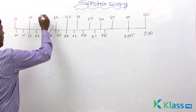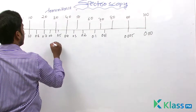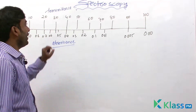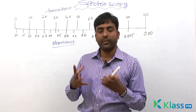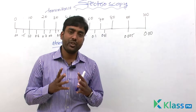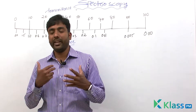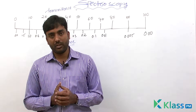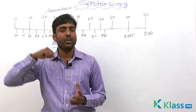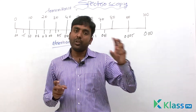What Beer-Lambert's Law tells us is there is a relation between absorbance and the concentration and path length of the absorbing medium. Here transmittance and absorbance values are given. This chart gives information about the relation between transmittance and absorbance. Transmittance is a measure of the amount of radiation transmitted by an absorbing medium — simply the ratio of the intensity of transmitted radiation to the intensity of incident radiation.